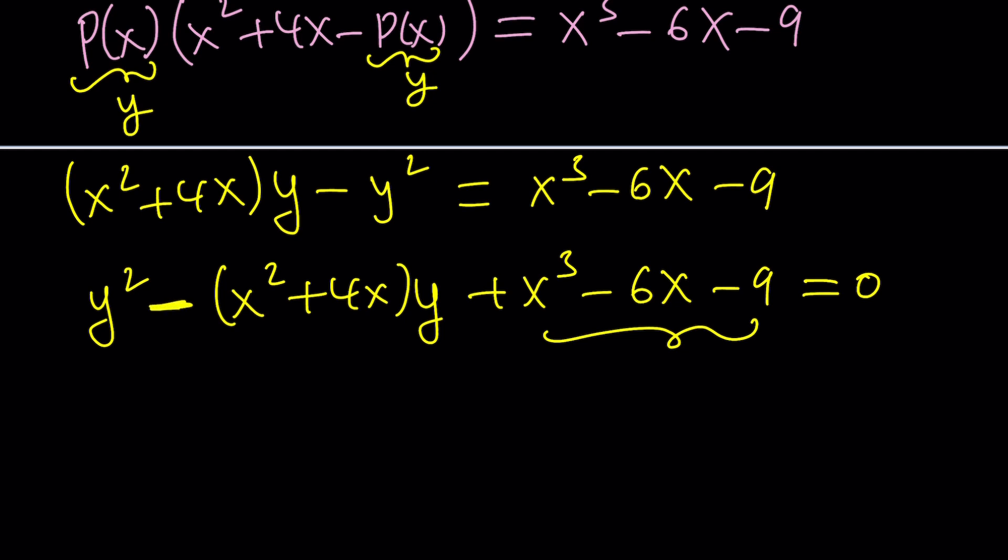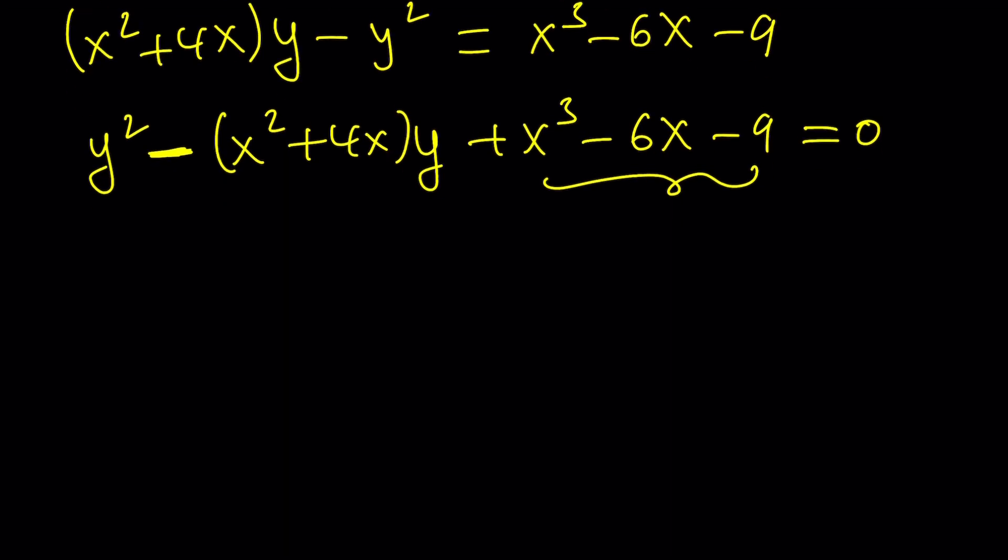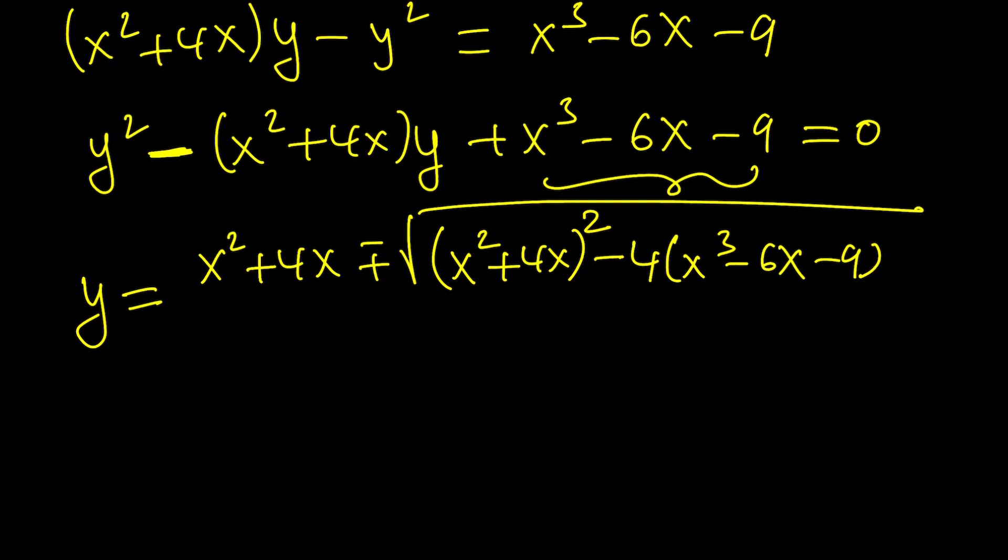So we're going to use the quadratic formula. y equals negative b plus minus the square root of b² - 4ac. And a is 1, so I don't need to worry about it. All over 2a, which is 2.